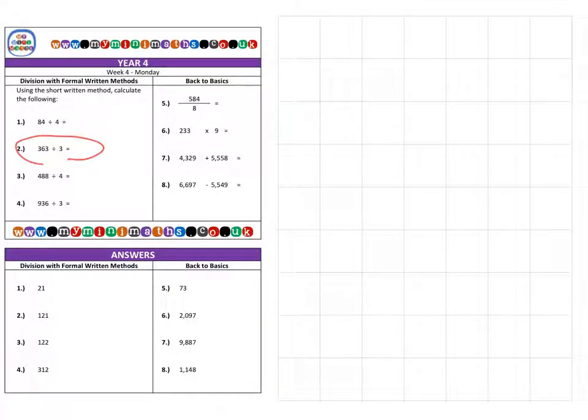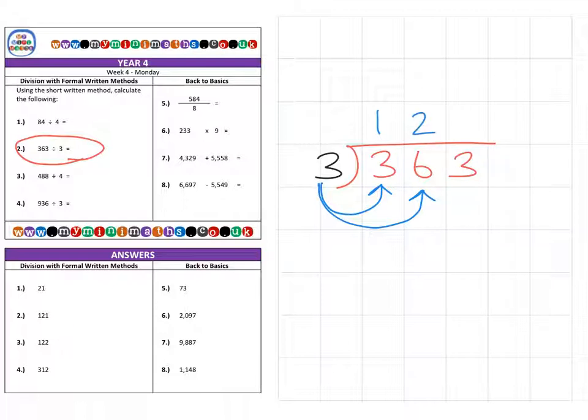Back to question two, we'll look at the shorter division method or the bus stop method. How many threes fit into 3? That's 1. How many threes fit into 6? That's 2 for 20. How many threes fit into 3? That's 1, for a final answer of 121.